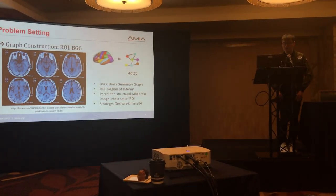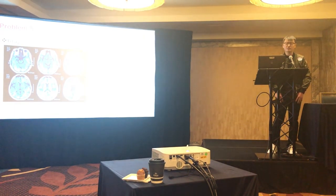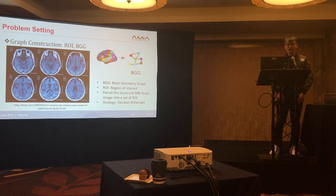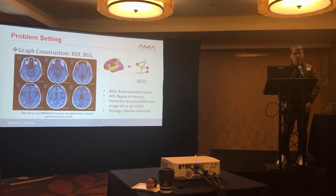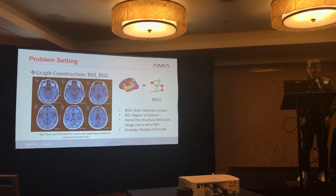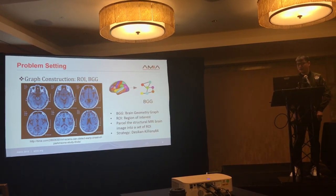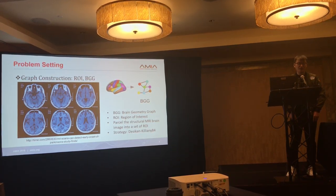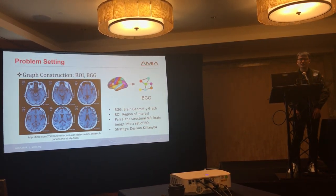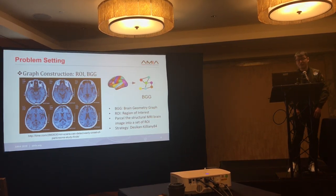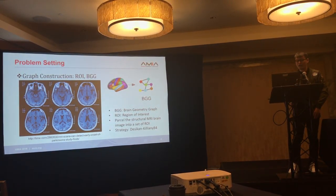Before we go to the methodology, we need to first construct the graph for the problem setting. We use the software called FreeSurfer to parcel the MRI image data into a set of regions of interest, or ROIs. Each MRI image is parceled into 84 ROIs, and we capture the geometric coordinates of those ROIs. Each ROI is treated as a node in the graph, called the Brain Geometry Graph, or BGG. The assumption is that if two ROIs are geometrically nearby, they may have similar activity in the brain.